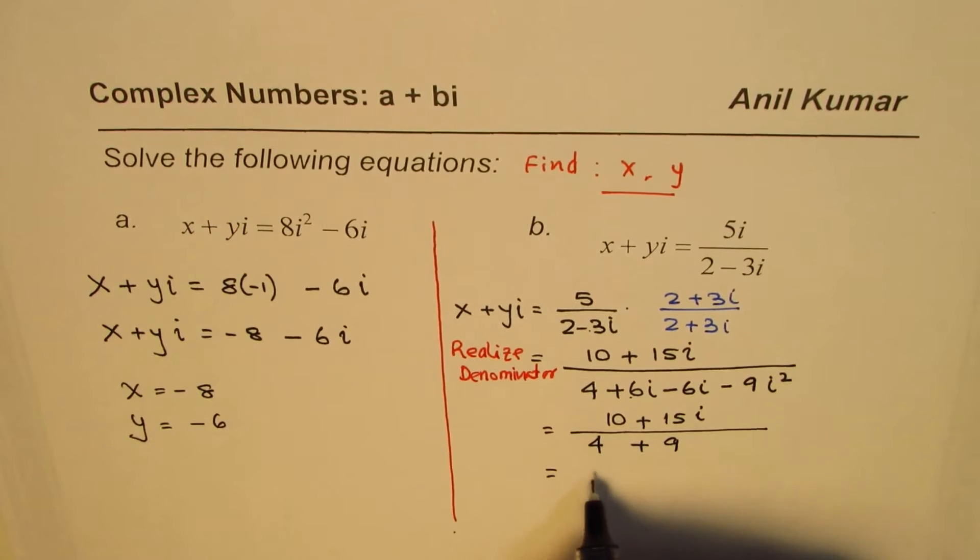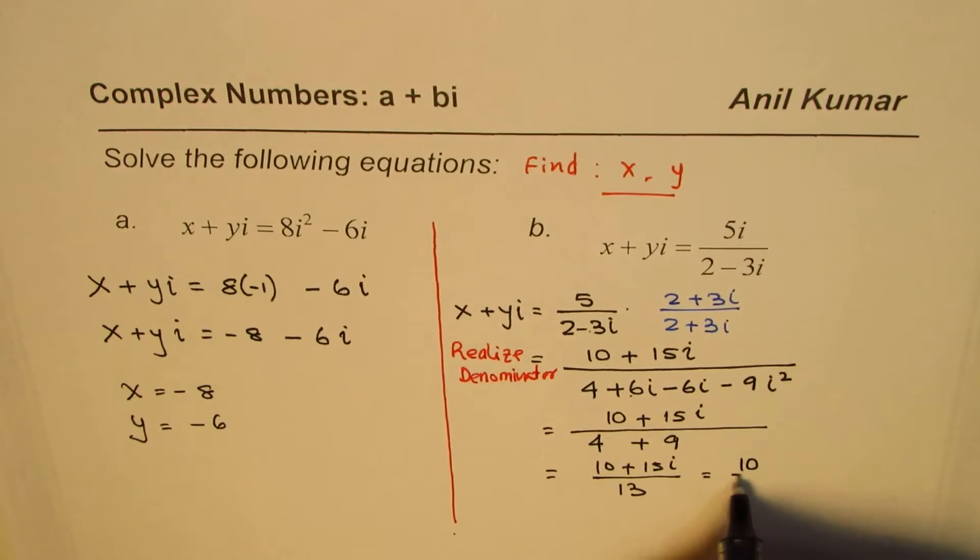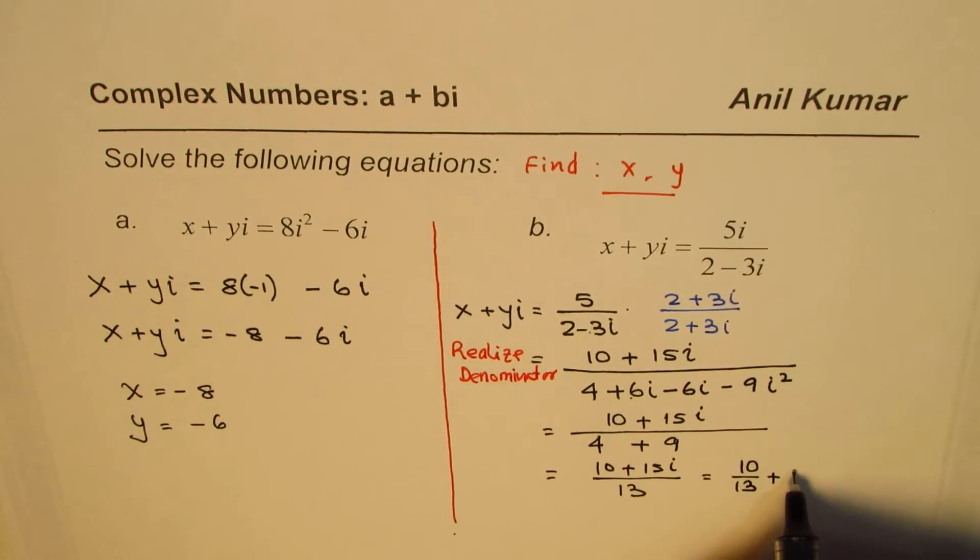So what we get here is 10 plus 15i divided by 13, which could be written as 10 over 13 plus 15 over 13i.